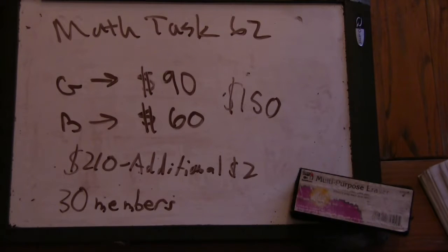Let's see. Now, 30 members, we need to find the number of girls. There's obviously more girls than boys because they pay a higher price. So, there's 30 members and the total cost is $210.